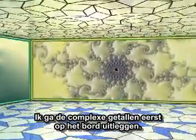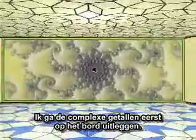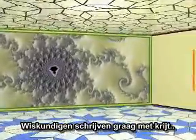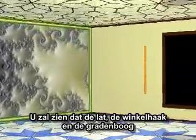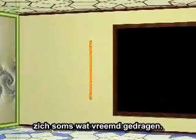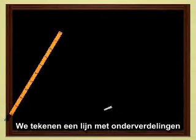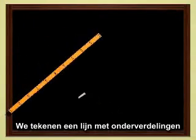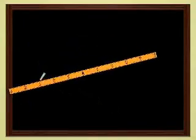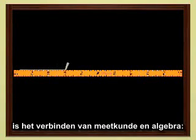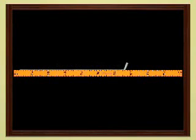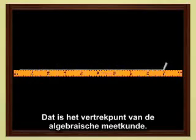Let me begin by explaining the complex numbers on the blackboard. Mathematicians just love writing with chalk. You'll see in a minute that my ruler, this set square and protractor, behave rather oddly sometimes. Let's draw a graduated line on the blackboard. One of the most beautiful ideas in mathematics is to link geometry to algebra. This is the starting point of algebraic geometry.